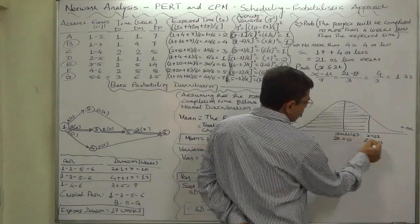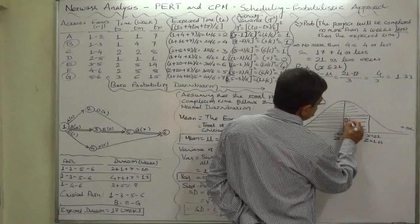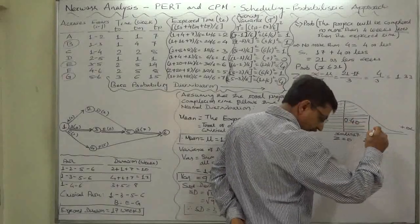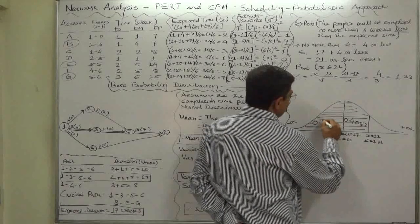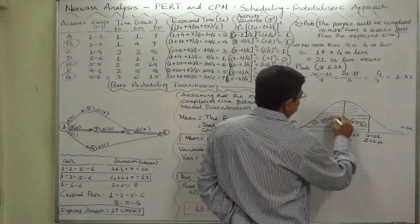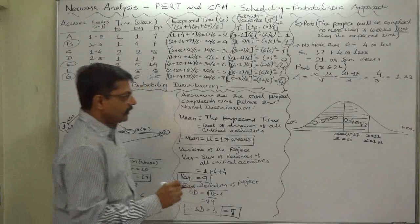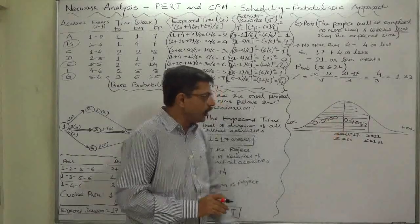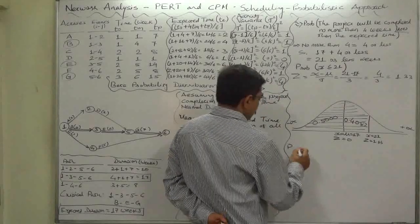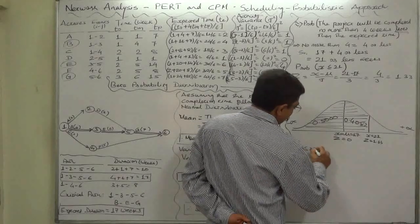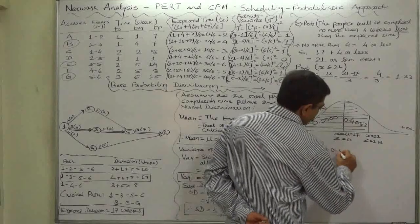Here z is positive 1.33. From the table we come to know that the area between z equals 0 and z equals 1.33 is 0.4082. We know that the area of the entire left-hand side of mu or mean is 0.5, so ultimately the required probability that x is less than or equal to 21 is the summation of these two.